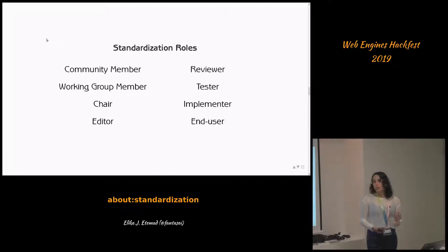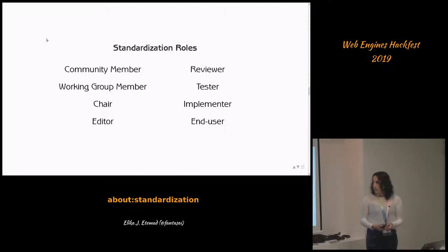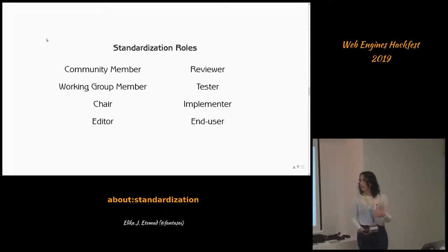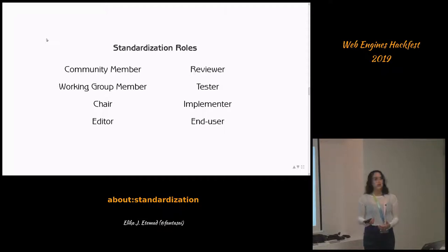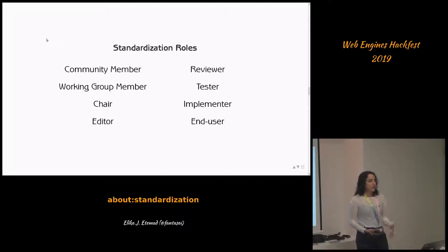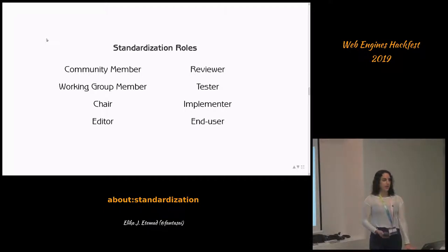Within the working group there are a couple of specialized roles. One is the chair, whose job is to facilitate the discussion. Then there's the editor, whose job is to write down the things everyone agreed on. You also need to accommodate reviewers — some will be working group members, some will be members of the public, and some will be implementers, testers, or end users. You want people from all these categories looking at your standard, making sure it's solving the problem and doing a good job of it.